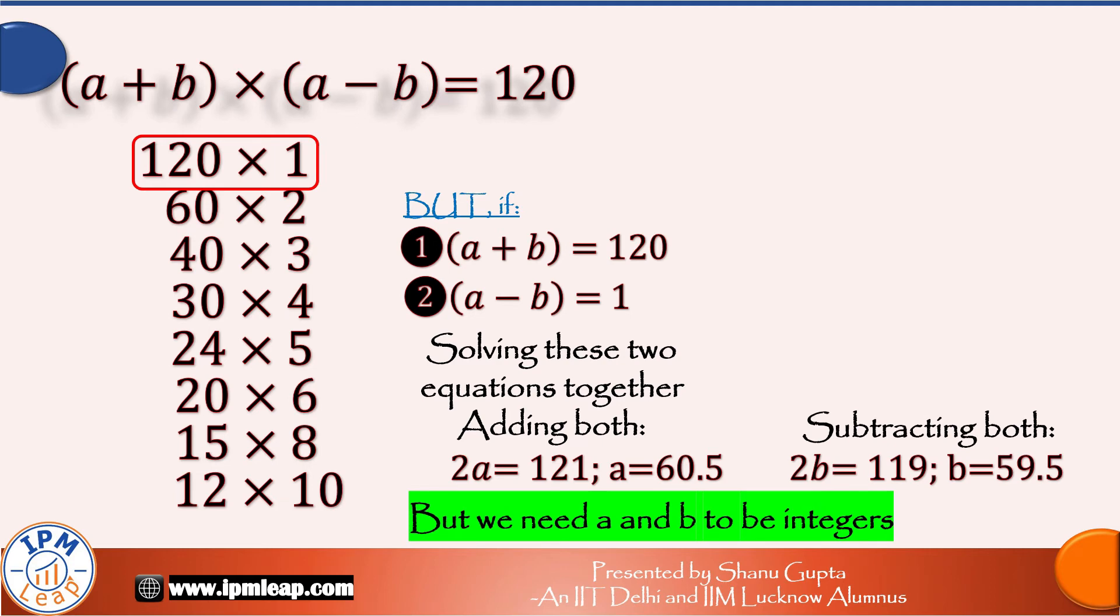But remember, we need a and b to be positive integers, countable numbers. Does that mean we have to solve equations for each of these eight ways to verify? Well, no.